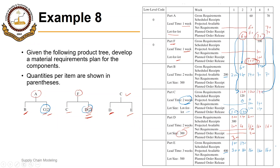This is how we can use multiple — more than one — bills of materials together, especially when they have some components in common, like A and F had C in common, and F and C had D in common as well. We had two end items A and F and used them together to plan for the material. Thank you.